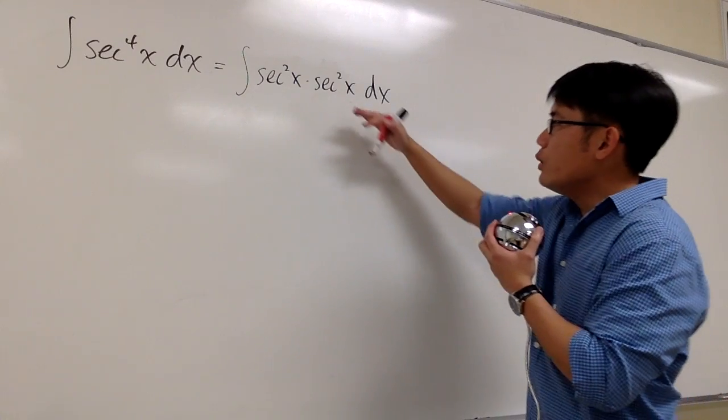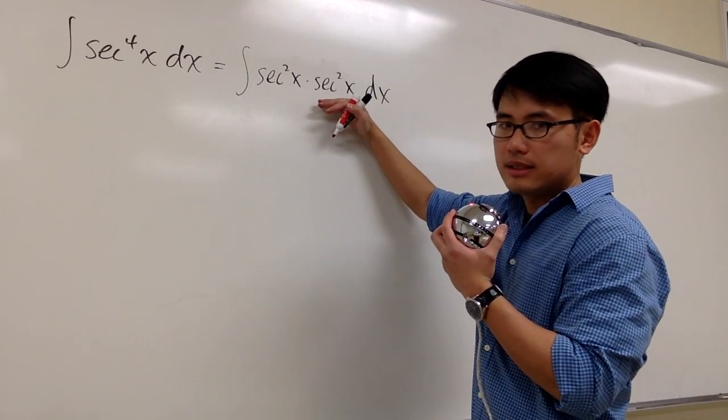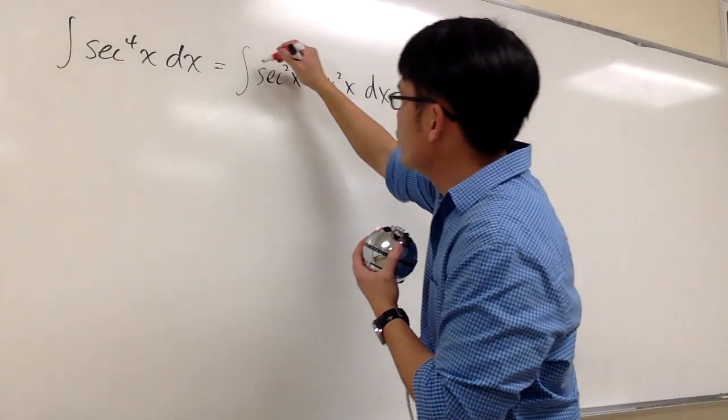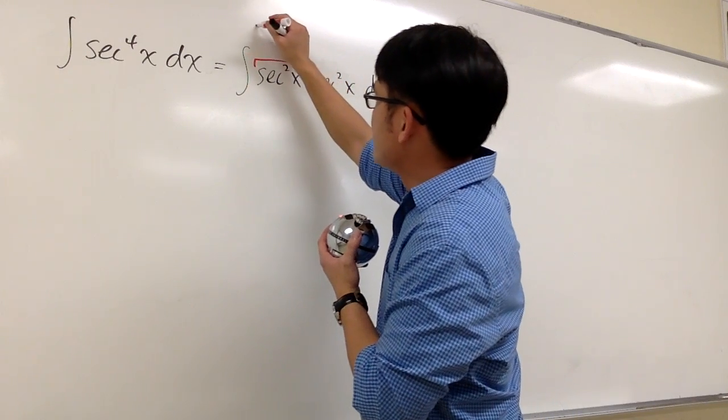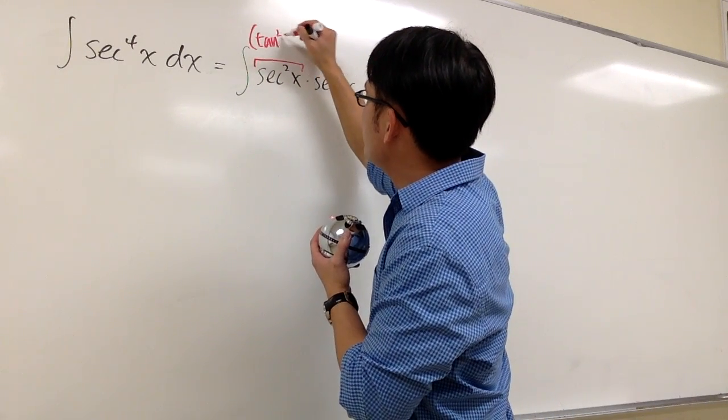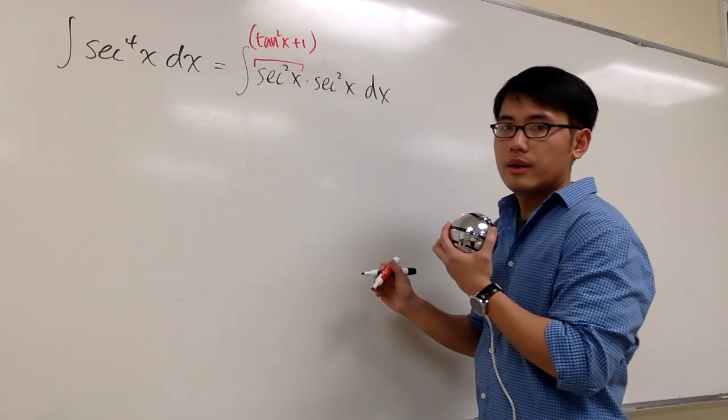I would like to save one of the secant squared x as a factor, and I'm going to look at this right here. Secant squared x has an identity that's the same as tangent squared x plus 1.